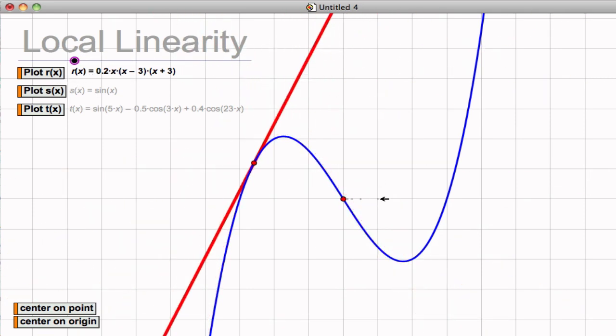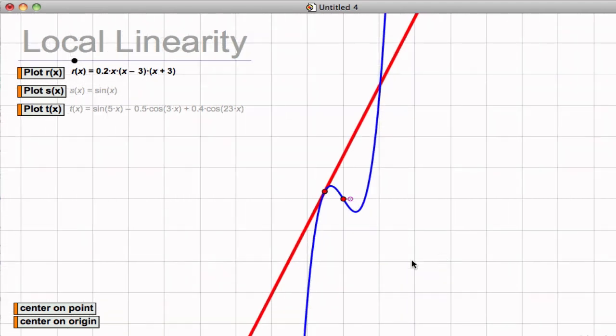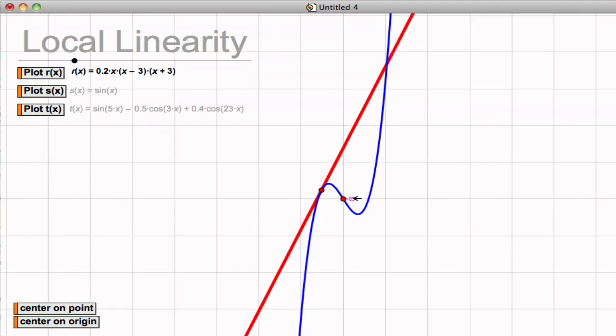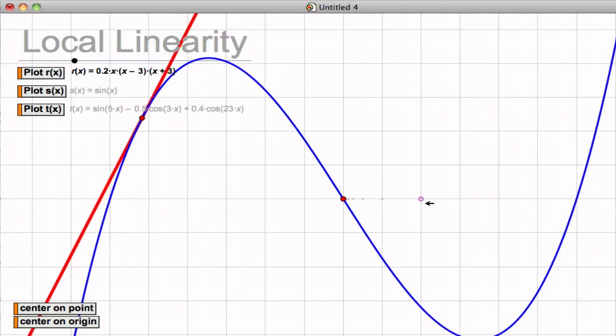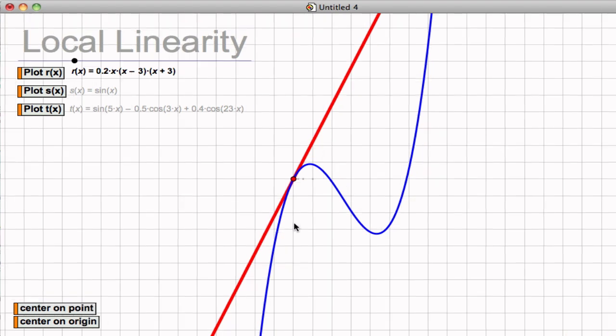So if we zoom out, we can see that maybe some people might say that the tangent line gives a good impression of what this function does, but local linearity refers to, on a smaller scale, as we zoom in. So this has nothing to do with end behavior, but as we zoom in to the point of tangency...